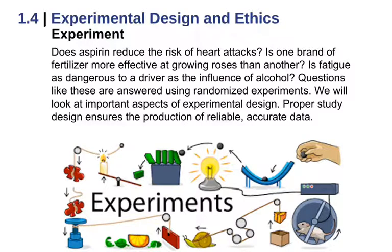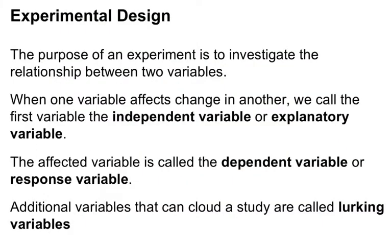In section 1.4 we're going to talk about experimental design. There are two ways to gather data: observational and experimental. We're going to mainly focus on observational, but it's worth talking about experimental, especially if you're going to be a social science major and take an upper division stats course. Experimental design typically involves having a couple of groups where you're changing something with one group and holding the other constant.